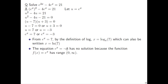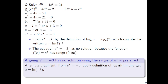For the second equation, e to the x equals negative 3, that has no solution because the function f of x equals e to the x has range 0 to infinity. So no matter what you plug in for x — whether positive, negative, or 0 — the output of e to the x is always bigger than 0. You could never get e to the x equals negative 3. Arguing no solution due to the range of the function e to the x is the preferred approach.